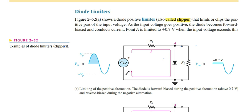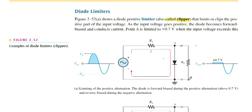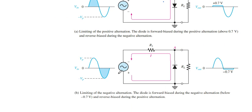When the negative side of the input voltage is going through the circuit, the diode is reverse biased. The current can pass through the load resistance RL and go back, and the output voltage remains the same. When we reverse the diode, the negative side is now being clipped.